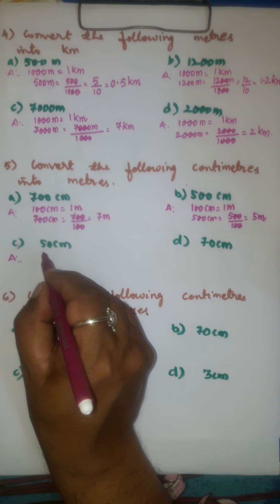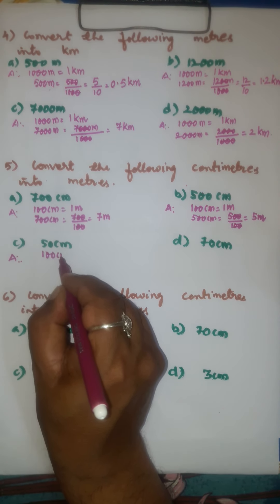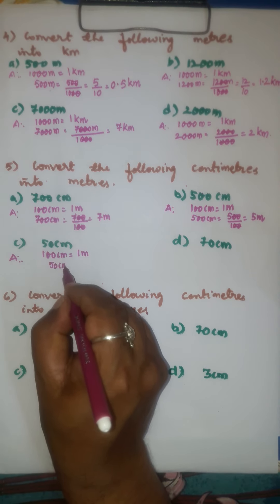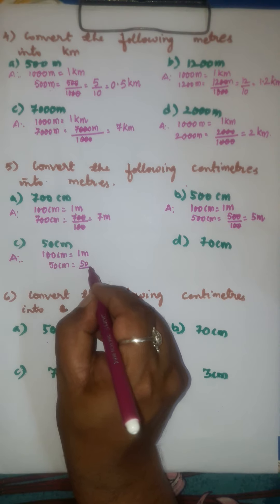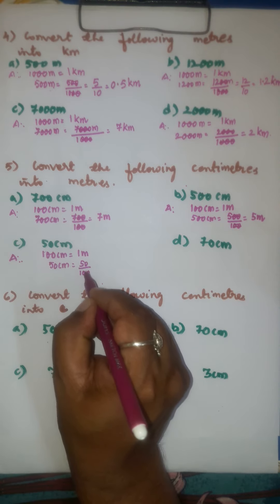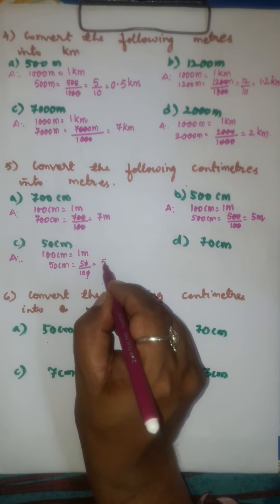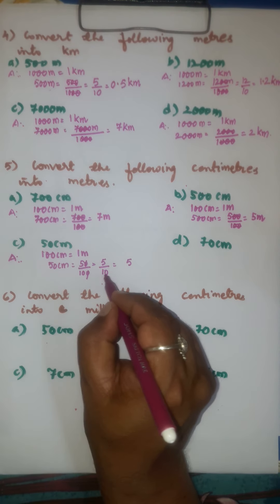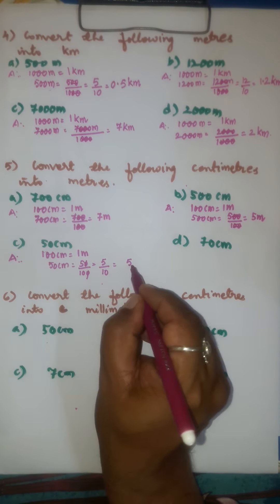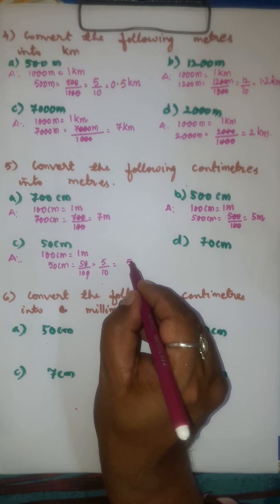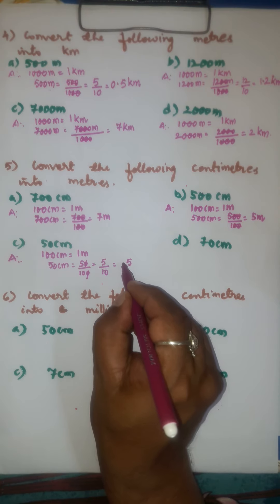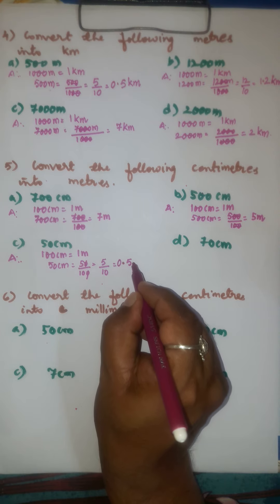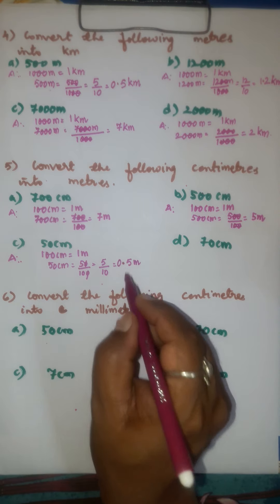Fourth problem: 100 centimeters is equal to 1 meter. Therefore, 50 centimeters is equal to 50 over 100. After cancellation we get 5 over 10. In the numerator write 5 as it is; in the denominator after 1 there is one 0, so count 1 place from right to left and put the decimal point. Therefore, 0.5 meters is the answer.